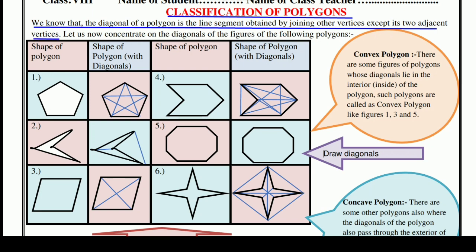हम जानते हैं कि polygon का diagonal हमें कैसे मिलता है। जब हम polygon के adjacent vertices को ना मिला के, जो उसके other vertices हैं — यानि जो irregular vertices हैं — उनको join करते हैं एक line segment के थूँ, तो हमें polygon का diagonal मिल जाता है।